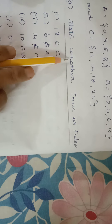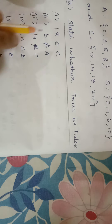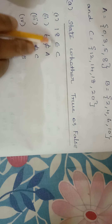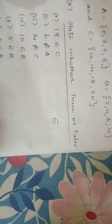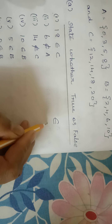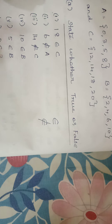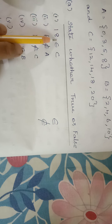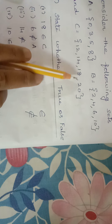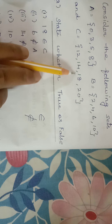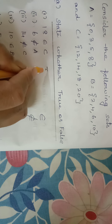18 ∈ C — the symbol that looks like an E-shape means 'belongs to,' and the crossed version means 'does not belong to.' So, does 18 belong to C? Yes, 18 is in C. So it is true.